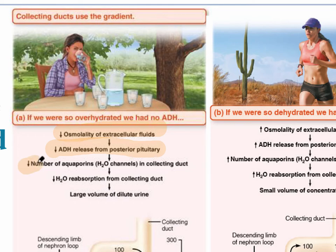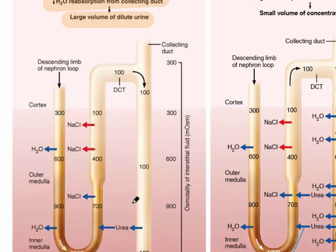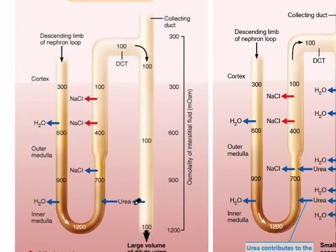There is a lack of aquaporins, or water channels, in the collecting duct as a result, because ADH signals the formation of these aquaporins. Since there are fewer aquaporins, there is less water reabsorption from the collecting duct, and as a result, there is a large volume of dilute urine. Reabsorption means returning or reclaiming water back into the blood vessels.